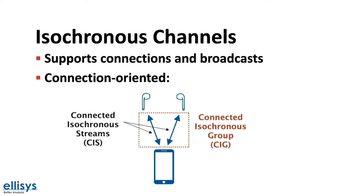CIGs allow bi-directional data transfer, such as in earbuds that contain microphones, and for sending control data to the source device. Note that a device may create multiple connected isochronous groups.